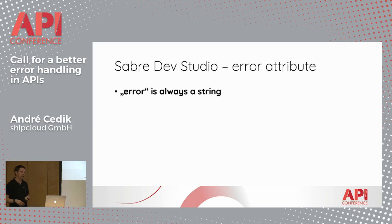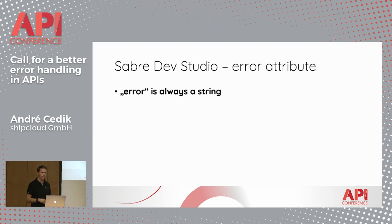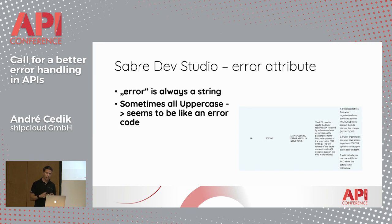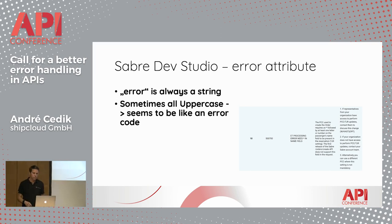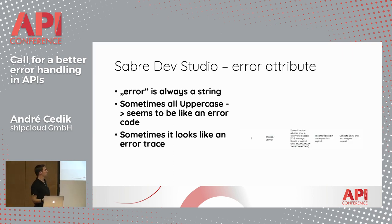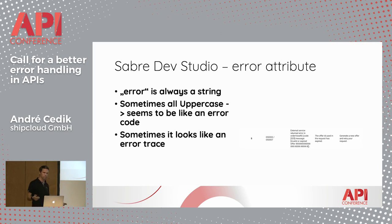Looking at the SaberDev Studio API docs, you can read about their error handling. The documentation shows a "code" attribute and an "error" attribute, which is always a string. Unfortunately, it's not clear what the meaning of this error attribute is. Sometimes it's written in uppercase, so it seems to be something like a key. And at other times, it looks more like an error trace, when it says "external service returned error in somewhere." Very weird.